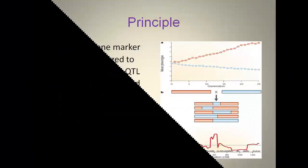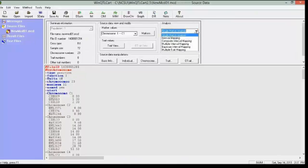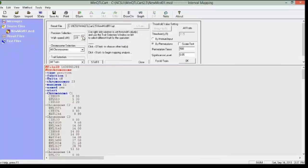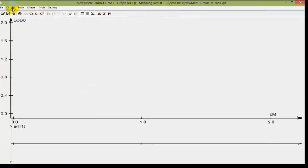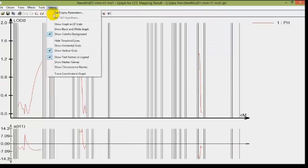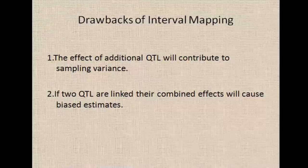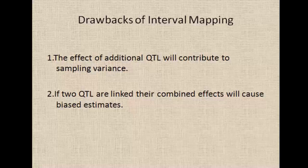Performing interval mapping. The principle behind interval mapping is in which one marker at a time is analyzed to construct a putative QTL by performing likelihood ratio test at every position in the interval. Map functions like Kosambi and Haldane are used to transfer the recombination frequency into map distance and vice versa. Select interval mapping from the drop-down menu and click go. We have to change the walk speed and the permutation value and click go. A graph showing LR values on chromosome 1 will be displayed. Choose all chromosomes and all traits for easy view. Select options like show chromosome number and marker names. Drawbacks of interval mapping: the effect of additional QTL will contribute to sampling variance. If two QTLs are linked, their combined effect will cause biased estimates.